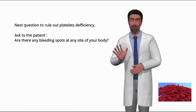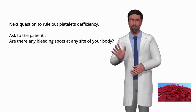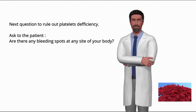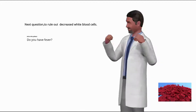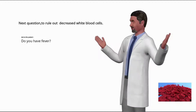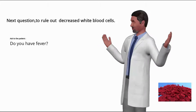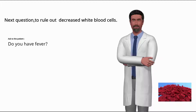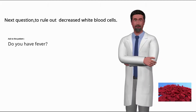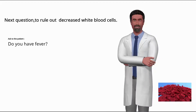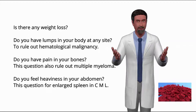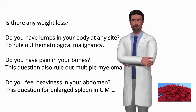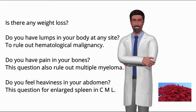To rule out platelet deficiency, ask the patient: are there any bleeding spots at any site of your body? To rule out decreased white blood cells, ask: do you have fever? The next questions are typical for history of anemia: is there any weight loss? Do you have lumps in your body at any site? These help rule out hematological malignancy.